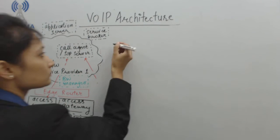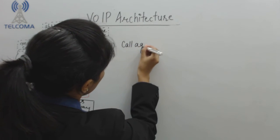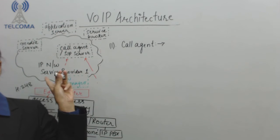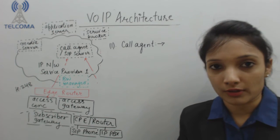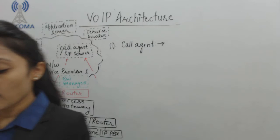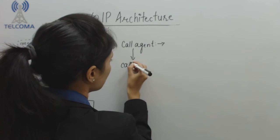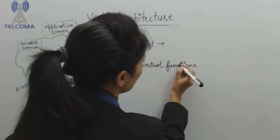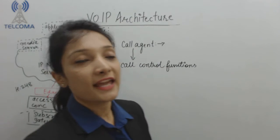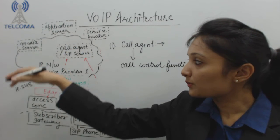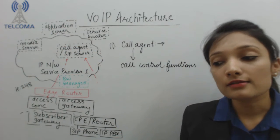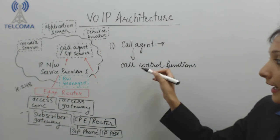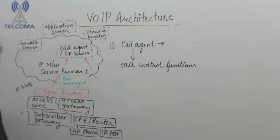The very first component is the call agent. The call agent is located in the service provider's network. The function of the call agent is that it provides call logic — that is, it provides call control functions. It is responsible for maintaining and monitoring every call state in its network, so the call agent is responsible for all call controlling functions in this particular service provider's network.